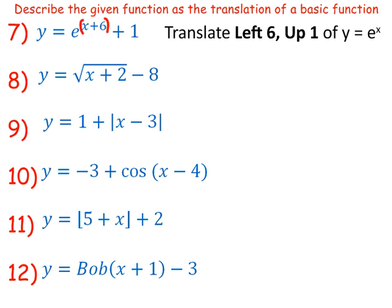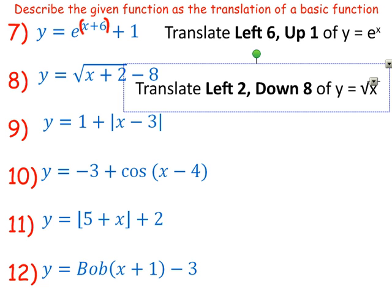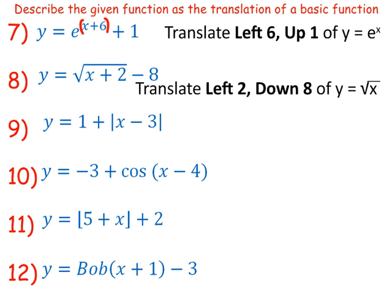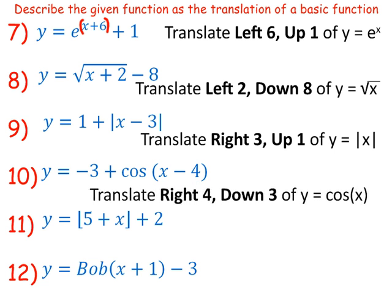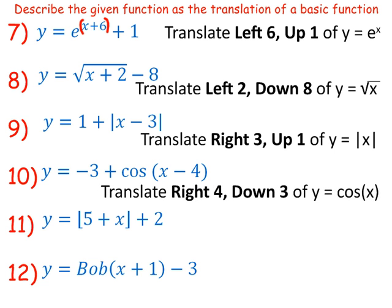Number 8, that's our square rooting function. Left 2, down 8. Number 9, I hope it didn't throw you that I put a 1 plus in front instead of doing plus 1 at the end. You know that's the same thing, right? So that would be our absolute value function, moved right 3 and up 1. Same thing on number 10. The order should not have confused you or I hope didn't confuse you. This is our cosine function, right 4, down 3.